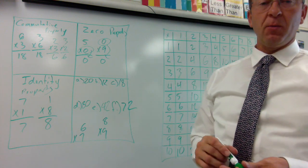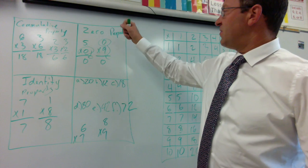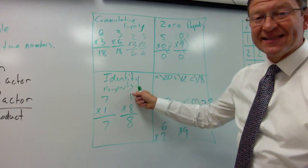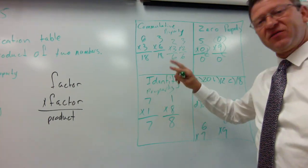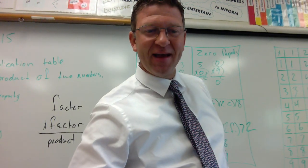All right guys, we've got the multiplication table to help you multiply. We also learned the zero property - any number times zero is zero. We've got the identity property - any number times one is itself. And we have the commutative property that says flip it over and you get the same answer. I'm off to lunch. Have a great day.